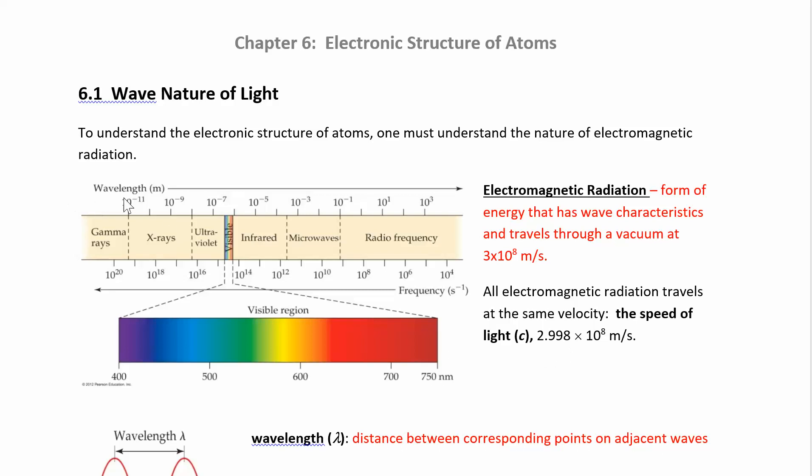But on the electromagnetic spectrum, you have gamma rays, x-rays. Here's the visible region that's 400 to 750 nanometers. So these are all the different colors that we see. You also have infrared, microwave, radio frequencies.